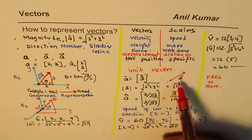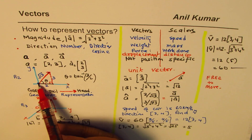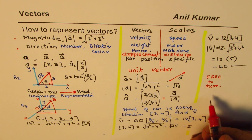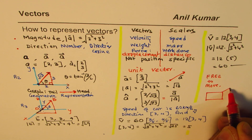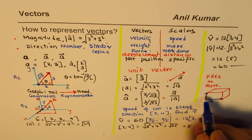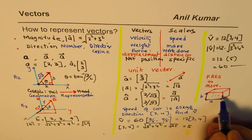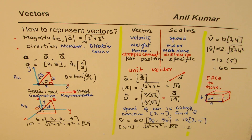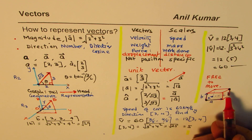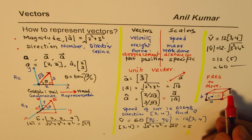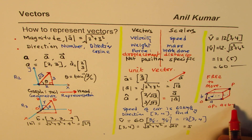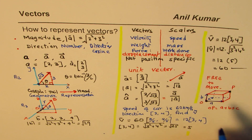Vectors are free to move. If you maintain magnitude and direction, it is exactly the same vector. Let me draw a three-dimensional figure with components a, b, and c along the three axes. The vector from origin O to point P — vector OP — equals a + b + c.